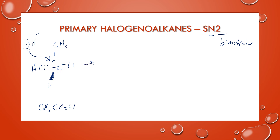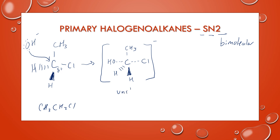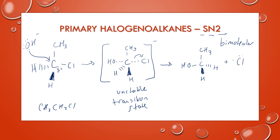When it does collide, it's going to form an unstable intermediate — an unstable transition state. You'll see that both the hydroxide and the chloride ions are interacting with that slightly positive carbon. From there, the electrons are going to transfer to the chlorine so that the chlorine can leave. You're going to be left with the hydroxide attached to the carbon, and the chlorine will be by itself as chloride.